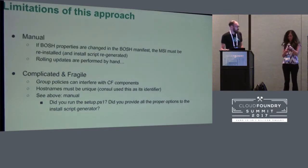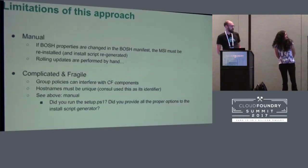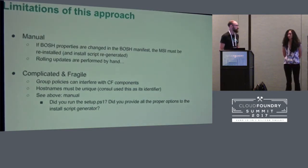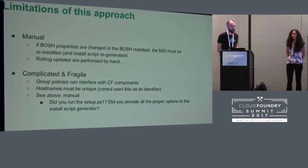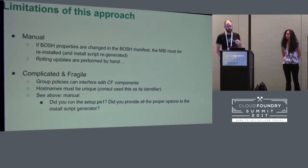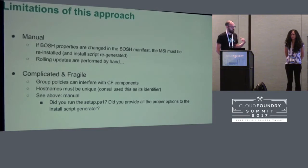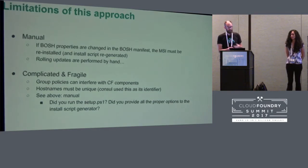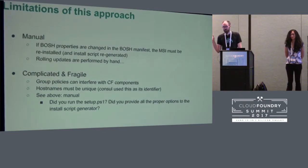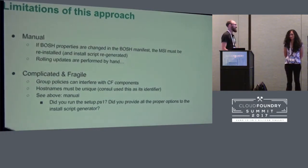Lots of limitations with that approach. The manual steps led to lots of problems. If BOSH properties were changed in a manifest during a BOSH deployment, inevitably you either forgot to rerun the install script generator and roll your cell, or something broke during that deployment process. Our Linux operators were used to a seamless canary deployment and rolling upgrade process that Windows operators weren't getting. We were hearing that everything was working great for the CF developer, but the Windows operator experience was terrible — and we heard that feedback loud and clear.